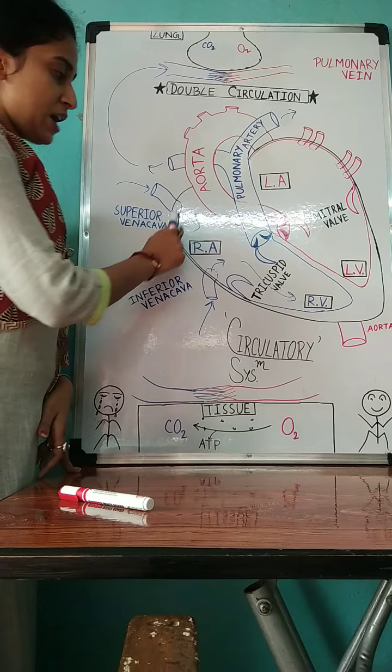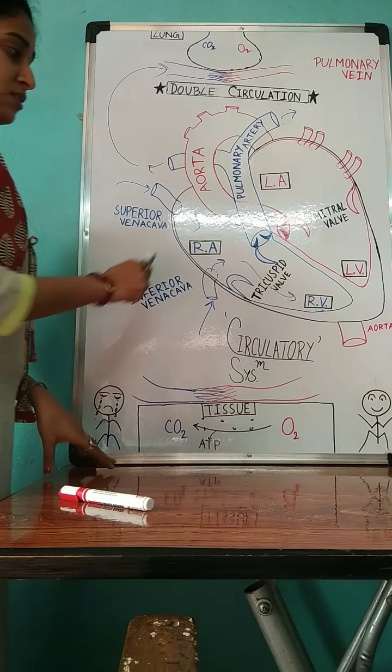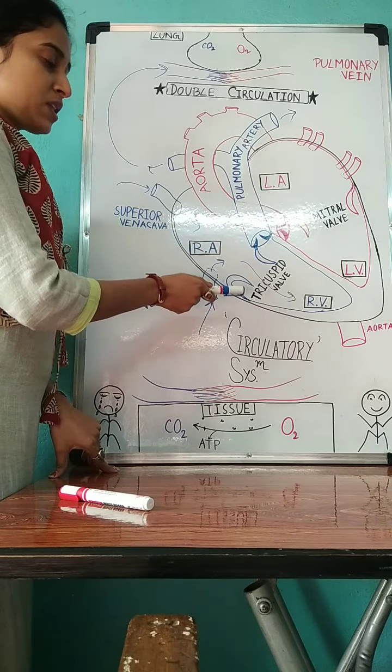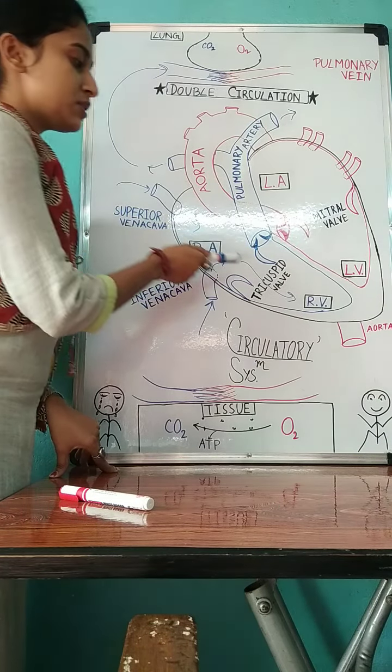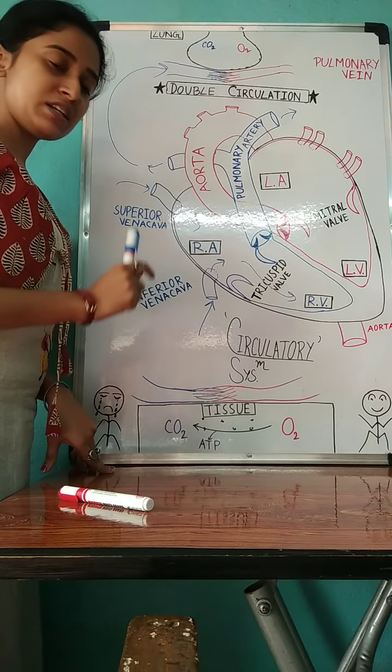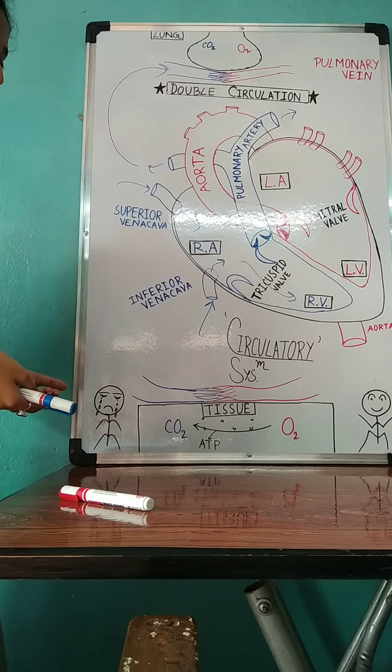In this time atrium is relaxed but when it gets totally filled, it starts to contract and opens the tricuspid valve and transfers the blood to the right ventricle. This time right ventricle is relaxed but again when it gets totally filled,